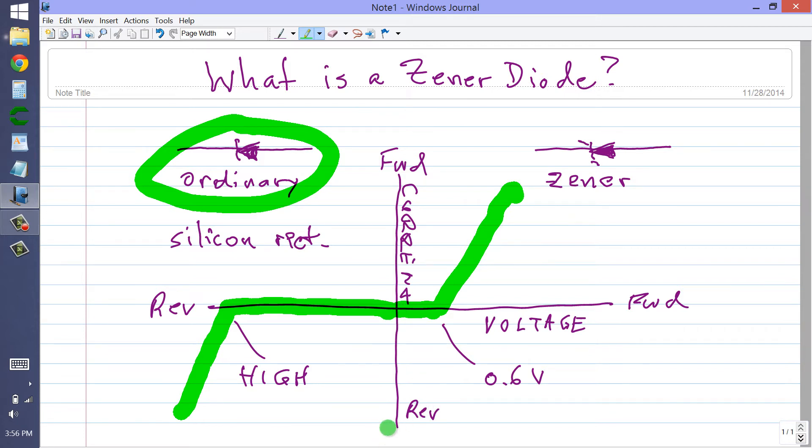So when you forward bias a diode, you are somewhere in this region here, and when you reverse bias a diode, you're somewhere down here. These other two quadrants simply don't have anything in them, and this is what a characteristic curve typically looks like for an ordinary diode, and there's the symbol for an ordinary diode.